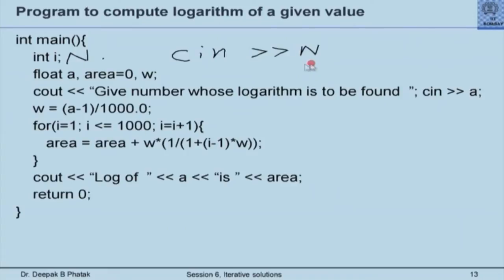The second modification: to determine whether the value of n we have selected is adequate, instead of collecting n as a single input, we can set up an external iteration and vary the value of n — say we evaluate the logarithm by approximating with 10 rectangles, 100 rectangles, 1000 rectangles, and 10,000 rectangles. I will explain this using a blank slide. This is a box which calculates the value of area for a given n: we go in with n and come out with the value of area.